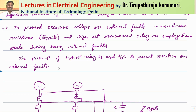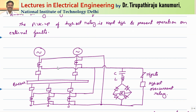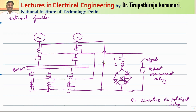However, during internal faults, some excessive over-voltages may be produced. In order to protect your relay from these over-voltages, one extra bypassing circuit is provided, which includes a thyrite resistor in series with a high-set overcurrent relay. Let us see the operation of this circuit.